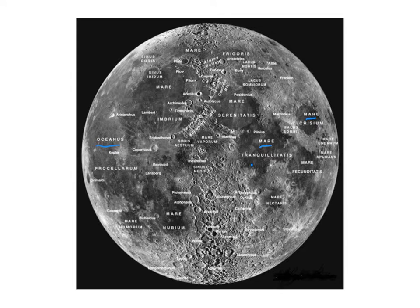We also notice that there's a whole bunch of craters, and a lot of these craters are going to be named after astronomers. We can see that we have Copernicus over here, and we have Kepler over here, and we have Ptolemy over here. They named a lot of these craters after scientists and astronomers and things of that nature. When we look at the Moon, there are features that we can look at, but how did these features come to be? That's what we're going to discuss in the next slide here.